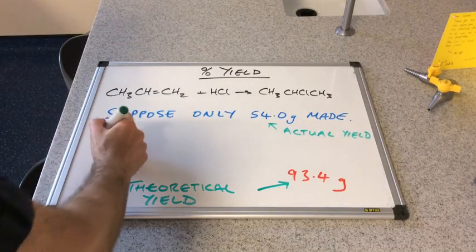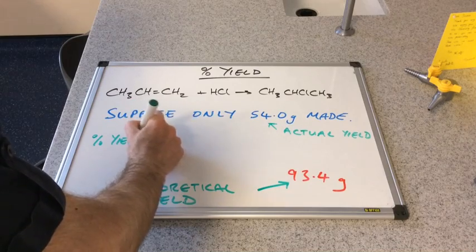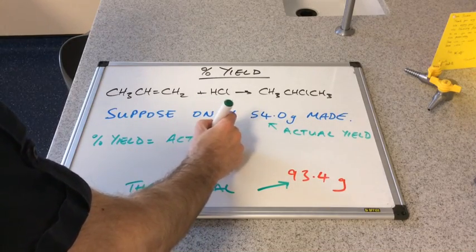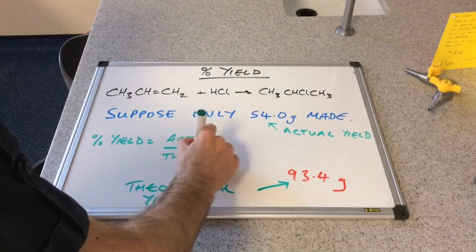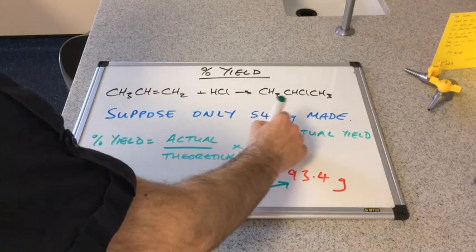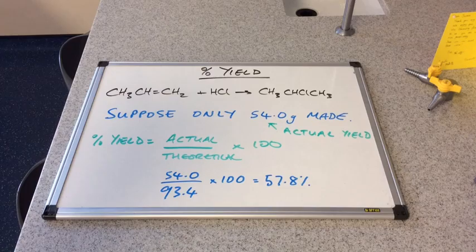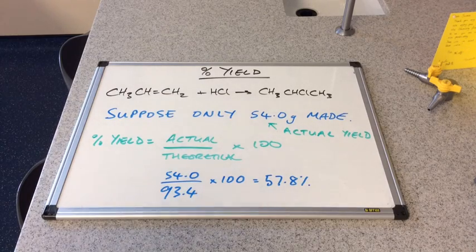The way to turn that into a percentage yield: the percentage yield equals the actual over the theoretical, multiplied by 100. You can see that gives us an answer of 57.8%.